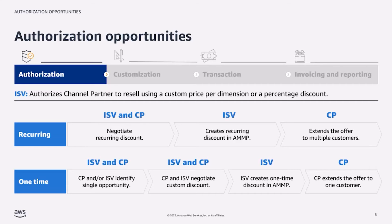When creating a recurring authorization opportunity, an ISV authorizes a CP to resell their product or products at an agreed-upon wholesale discount. This also enables CPs to create multiple private offers for multiple customers, as long as the recurring discount is active.